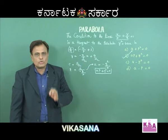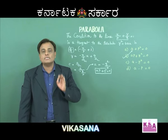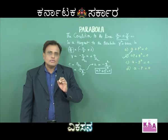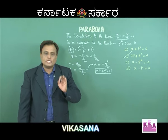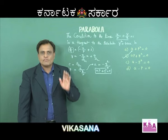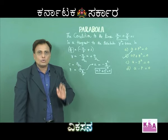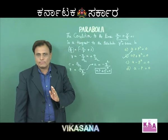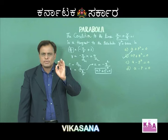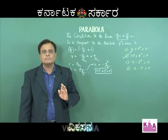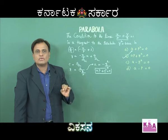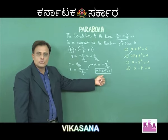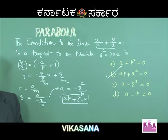Once again, reviewing: before solving such examples, one must know the condition for tangency. If a line y = mx + c touches the parabola, the condition is c = a/m. First, convert the given line equation to the form y = mx + c to get the values of m and c, then apply c = a/m and after cross multiplication you get ap + q² = 0. Therefore option B is the right option.